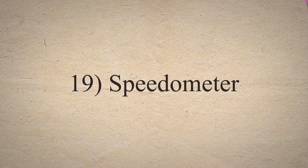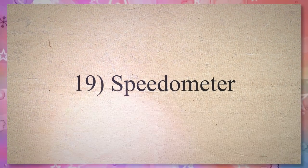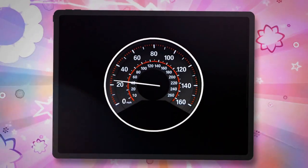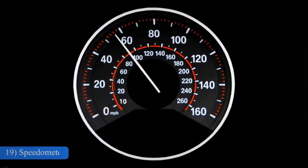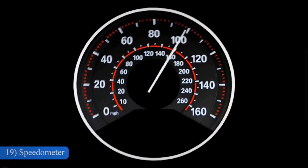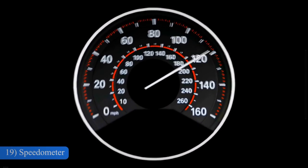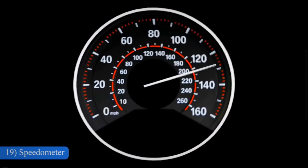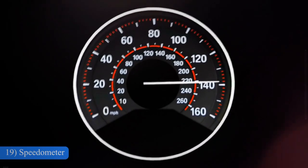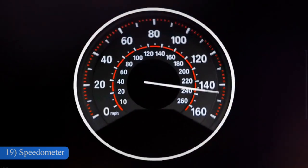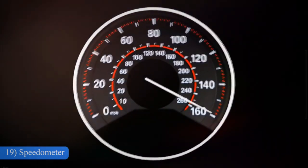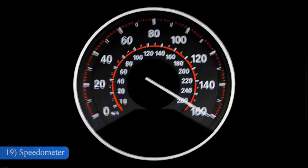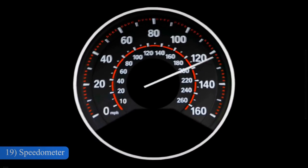19. Speedometer. A speedometer or speed meter is a gauge that measures and displays the instantaneous speed of a vehicle. It is located on the dashboard of the car. Many speedometers use a rotating flexible cable driven by gearing linked to the vehicle's transmission.